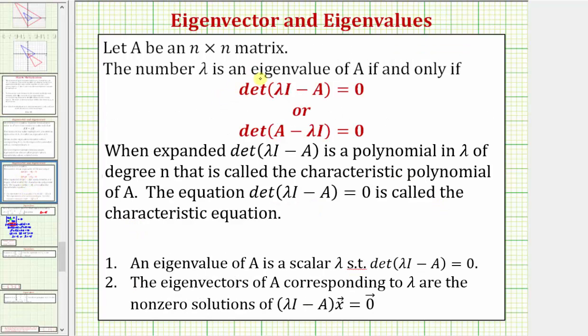The number lambda is an eigenvalue of A if and only if it satisfies either of these two equivalent equations: the determinant of lambda I minus A equals zero, or the determinant of A minus lambda I equals zero.